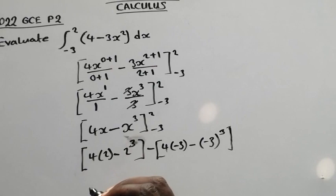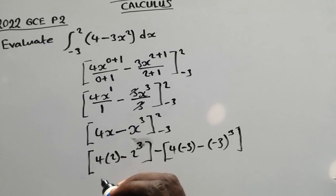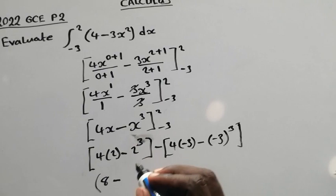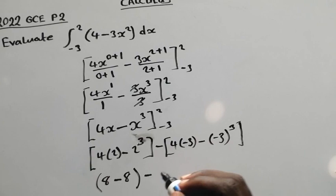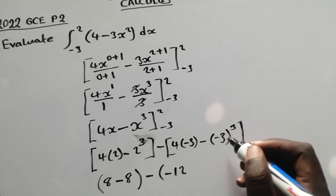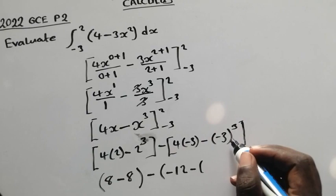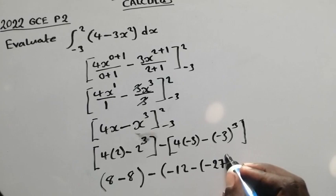So now at this stage we have to simplify it further. So (-3)³ is negative 27.